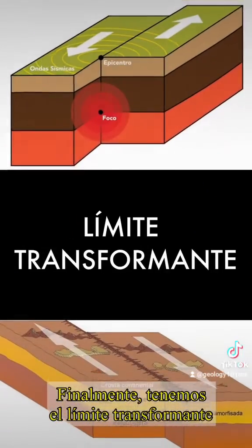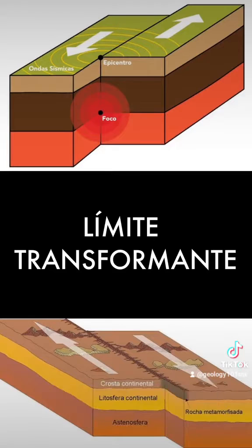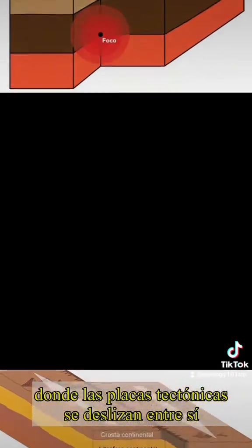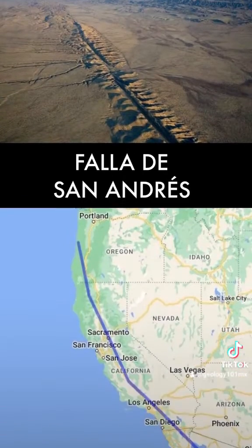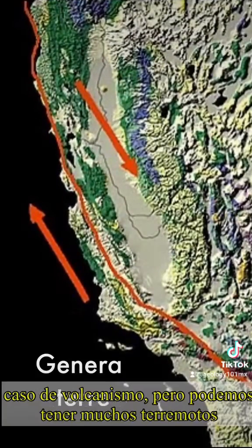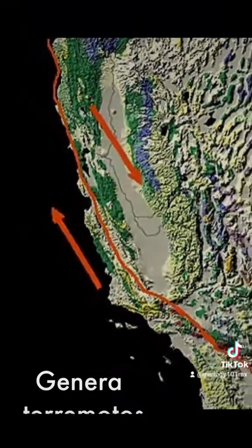Finally, we have the transform boundaries, where tectonic plates slide past each other. One important example of this is the San Andreas Fault. In these scenarios, we don't have any volcanism, but we can have a lot of earthquakes.